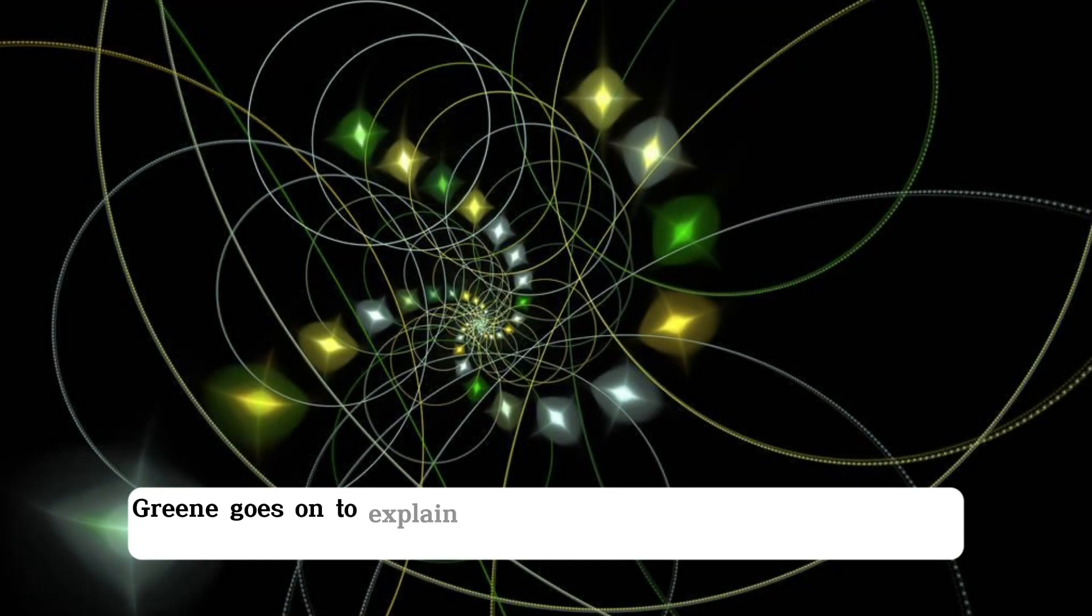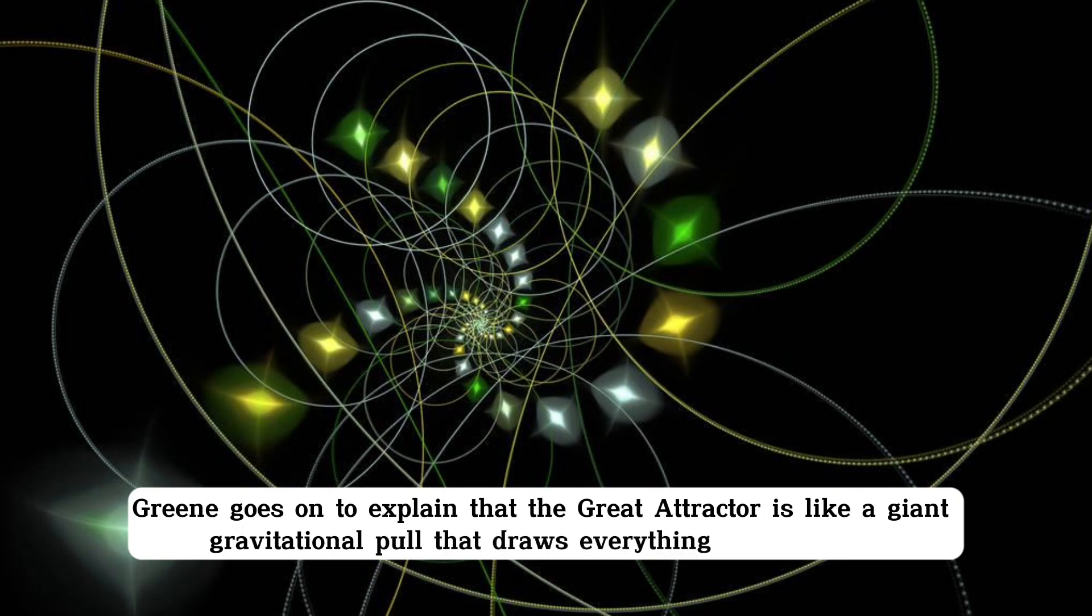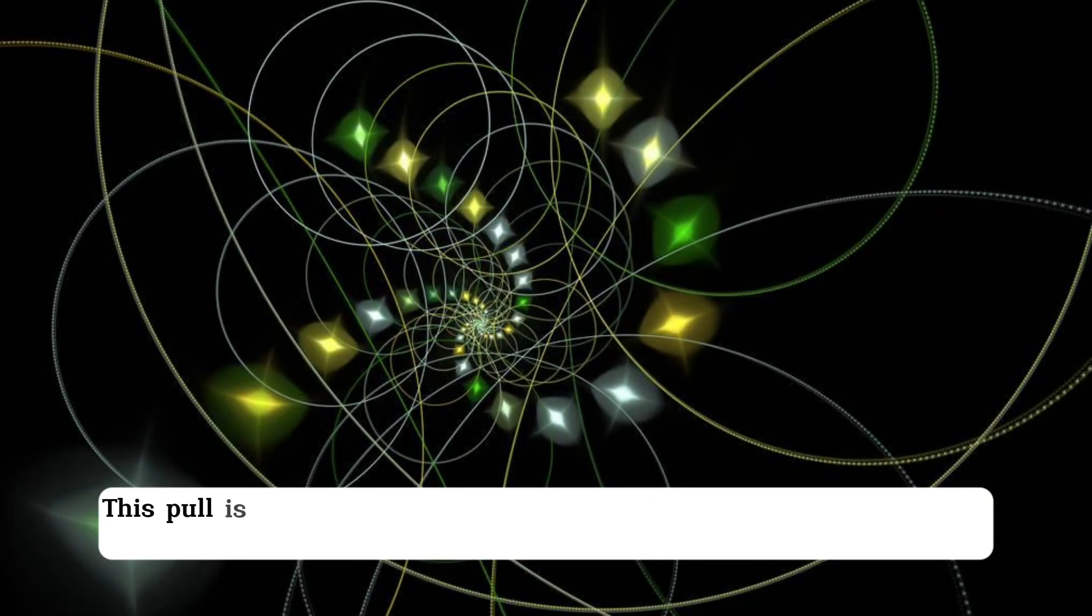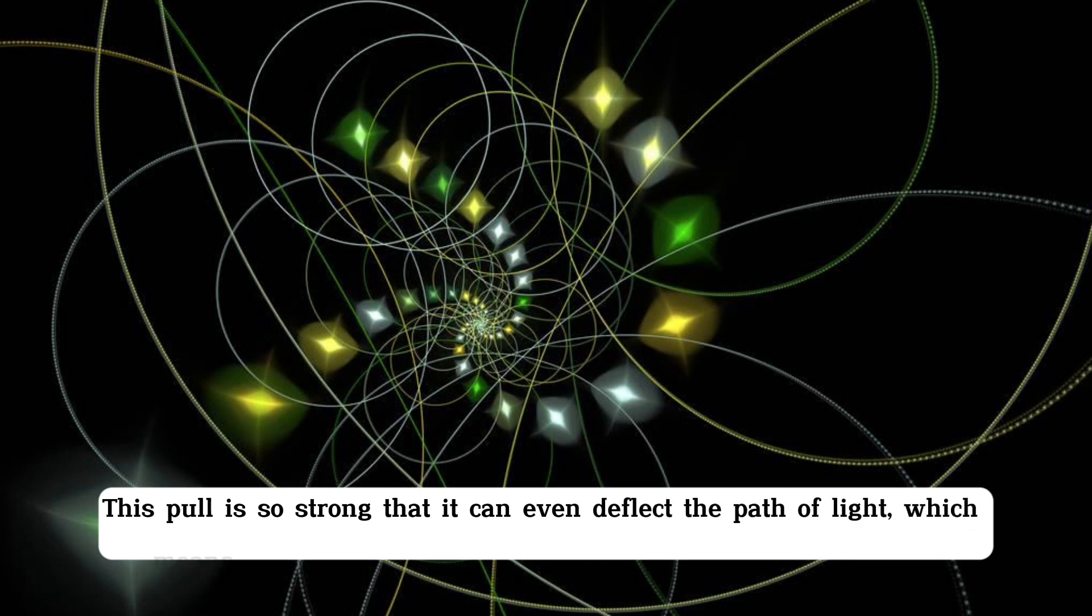Greene goes on to explain that the Great Attractor is like a giant gravitational pull that draws everything into its orbit. This pull is so strong that it can even deflect the path of light, which means that anything that crosses its path is pulled towards it.